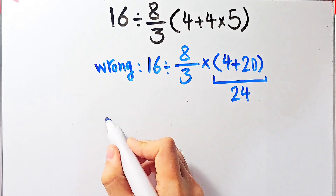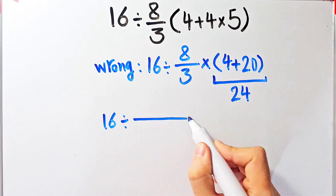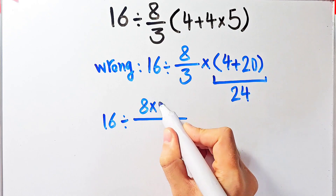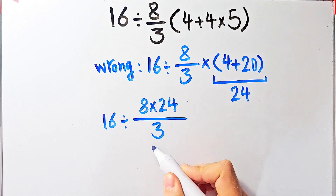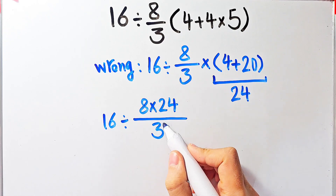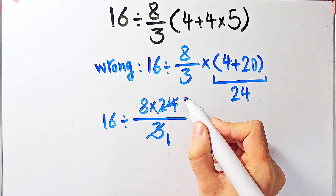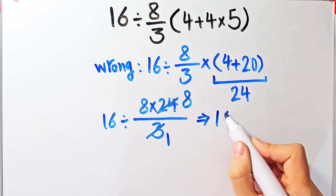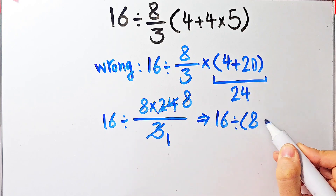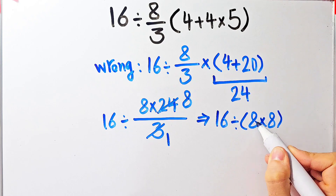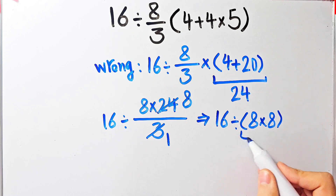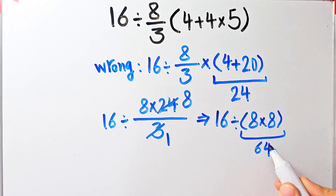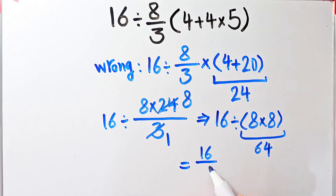After that they start from the left and simplify: 16 divided by 8 times 24, then divided by 3. They say 3 divided by 3 equals 1 and 24 divided by 3 equals 8, giving 16 divided by 8 times 8. Then they do this multiplication: 8 times 8 equals 64, and 16 divided by 64 equals 16 over 64. They say the final answer is 16 over 64 — but this answer is wrong.